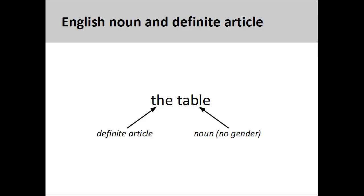A noun is a part of speech that names a person, place, thing, or idea. In modern English, nouns usually do not manifest any grammatical gender. The only definite article in English is 'the.'